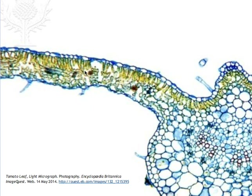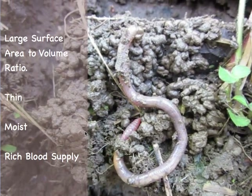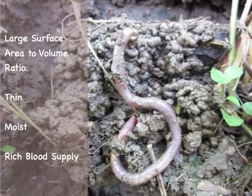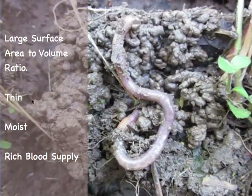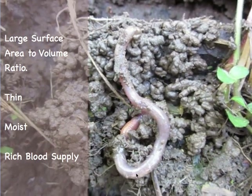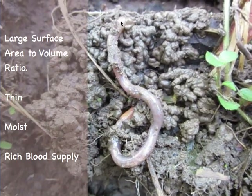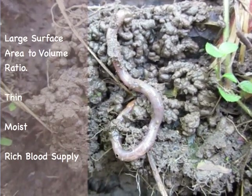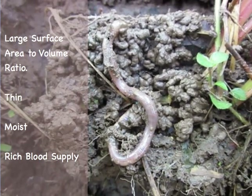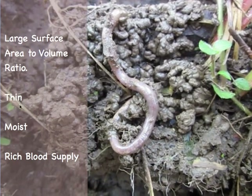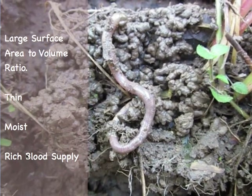The earthworm provides yet another example of the characteristics of gas exchange surfaces. Confined to a life in moisture-filled soil, the earthworm shows a large surface area through the folds in its skin. It has a very thin skin, which allows the blood capillaries to be easily seen. Large surface area, thin, moist, and rich blood supply — these are the four key characteristics of gas exchange surfaces such as the alveoli of the mammalian lungs.